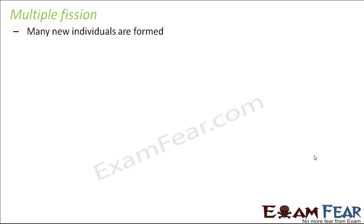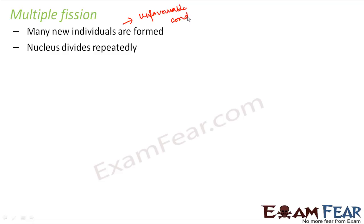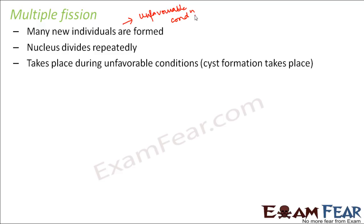Now let us talk about multiple fission. The concept is the same, except that instead of two you get many daughter cells. The nucleus divides repeatedly — not just once but continuously. Multiple fission takes place under unfavorable conditions, unlike binary fission which takes place under favorable conditions. For protection against unfavorable conditions, a protective covering called a cyst is formed over the cell.